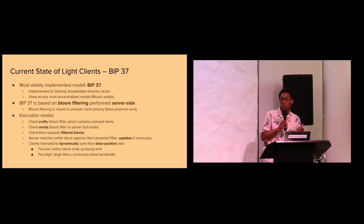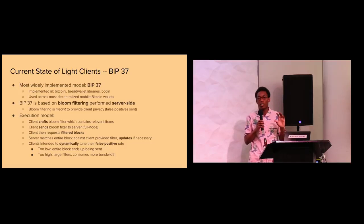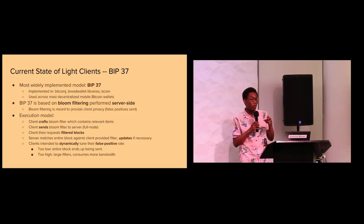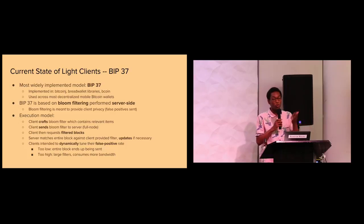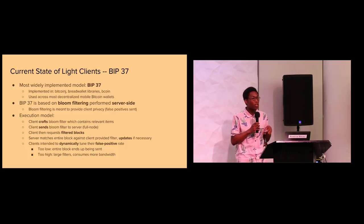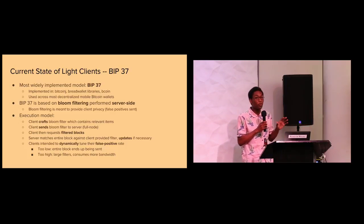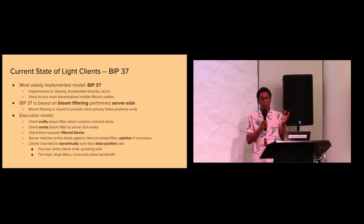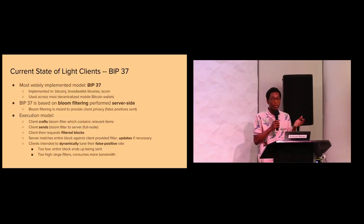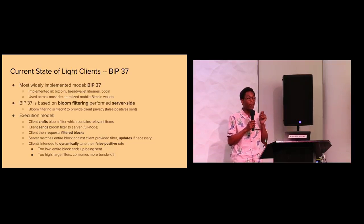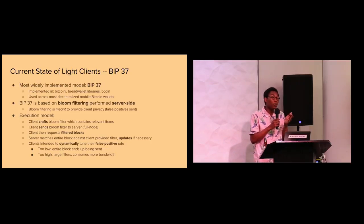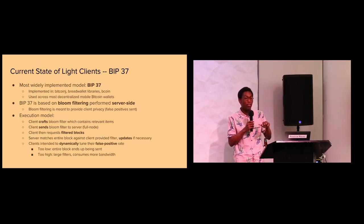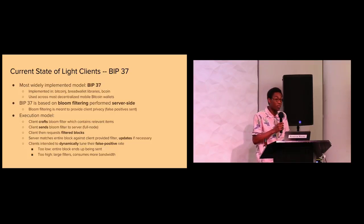BIP37 is used in most decentralized mobile wallets. The general model of BIP37 is basically bloom filtering performed on the server side. The original intention was that we have this bloom filtering thing with a tunable false positive rate, so clients can regulate it to basically not tell all the full nodes what all their addresses are. As we'll see in practice, that doesn't really work very well, but that was the initial intention for creating this type of node.